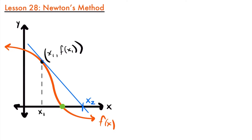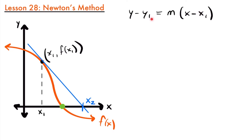To find what x sub 2 is going to be equal to, let's write an equation representing this tangent line using point-slope form: y minus y1 equals the slope m times x minus x1. We can take a point and plug its coordinates into x1 and y1 and find the equation of a line that goes through that point given the slope. Plugging in what we know, our y1 value is our function evaluated at x1, so we have y minus f of x sub 1 equals the slope times x minus x1.